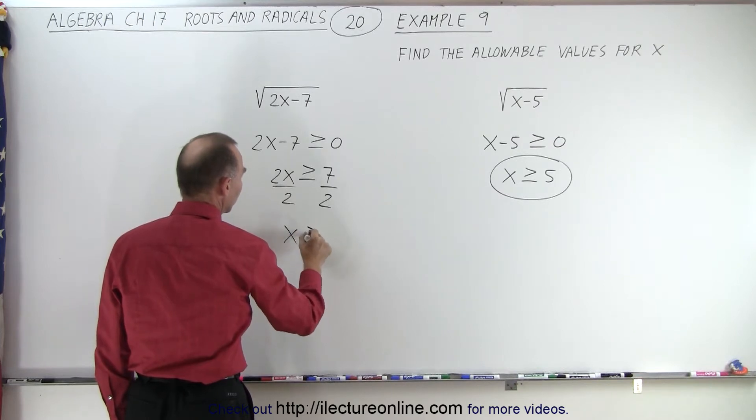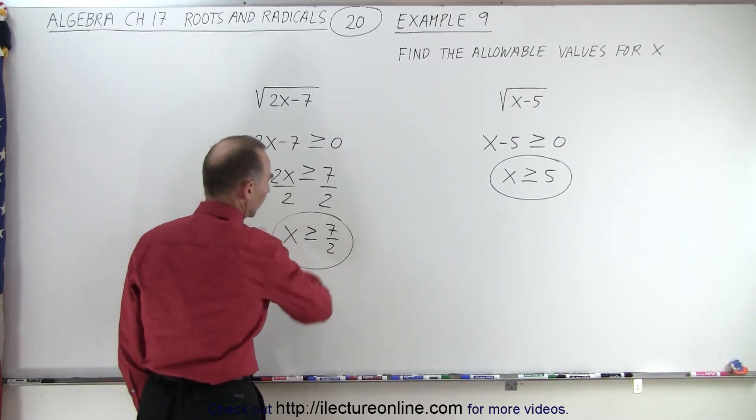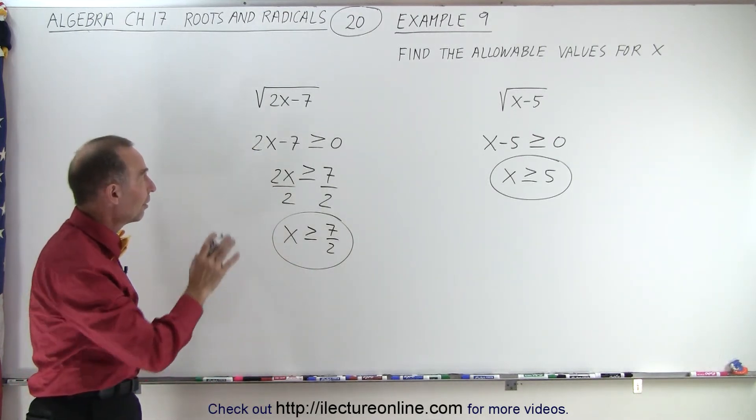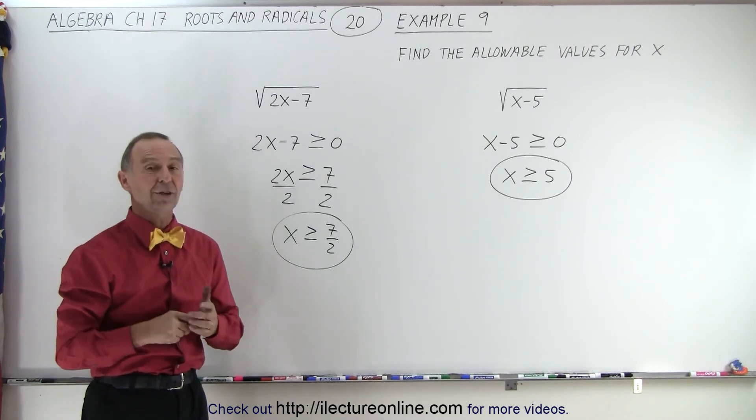we can say that x must therefore be greater than or equal to 7 over 2, or 3.5. And those are the values that x must have for those two radical expressions not to be imaginary numbers.